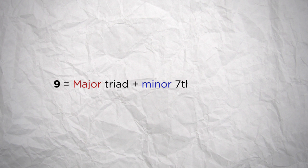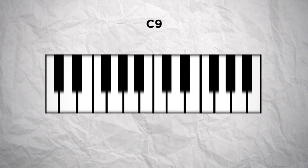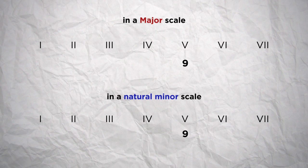The first type of 9th chord we're going to see is the dominant 9th, which is simply noted as 9. It is made of a major triad with a minor 7th — so that's a dominant 7th chord — to which we add a major 9th. So for a C chord that would be C, the major 3rd E, the perfect 5th G, the minor 7th Bb, and the major 9th D. This type of chord is often used as a dominant chord on the 5th degree of your tonality, so that would resolve well on a 1st degree for instance.